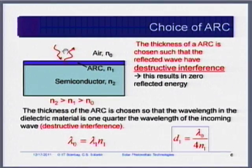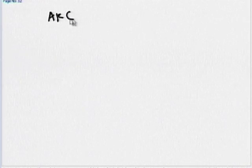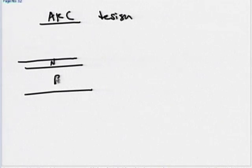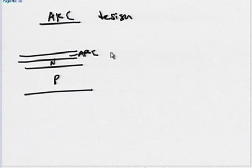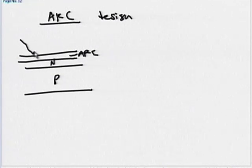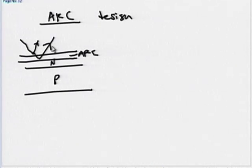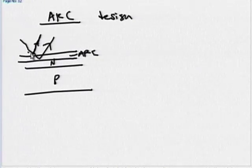The principle of ARC is simple. For a P-N junction solar cell, you put another layer called ARC so that the reflected light is minimum. Light can be reflected from the top surface of the ARC or from the bottom surface. The simple way to minimize reflection is to create a situation in which these two reflected rays — one from the top surface and one from the bottom surface — result in destructive interference.